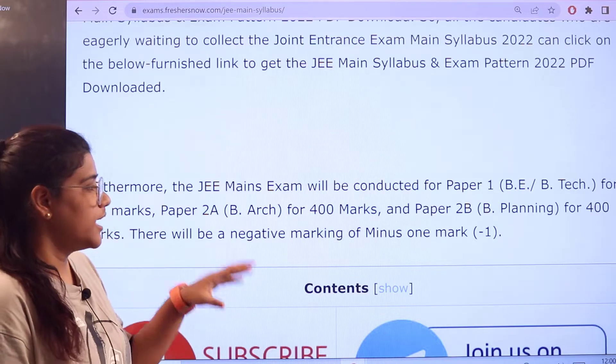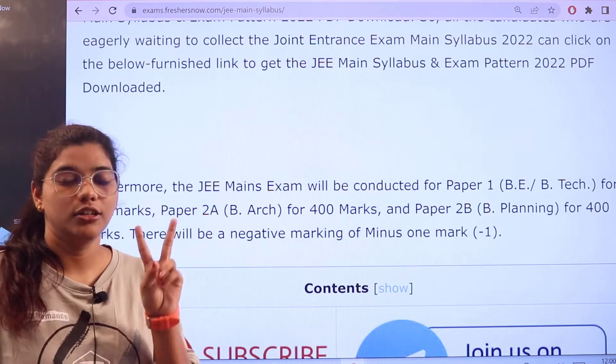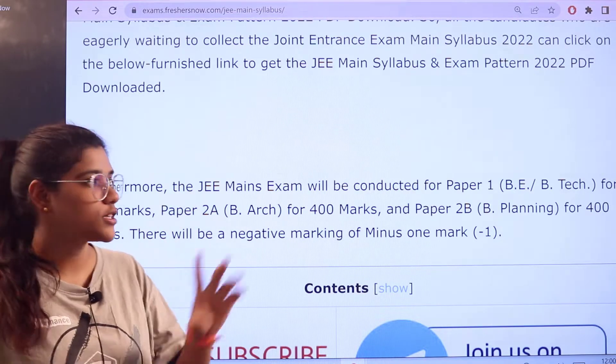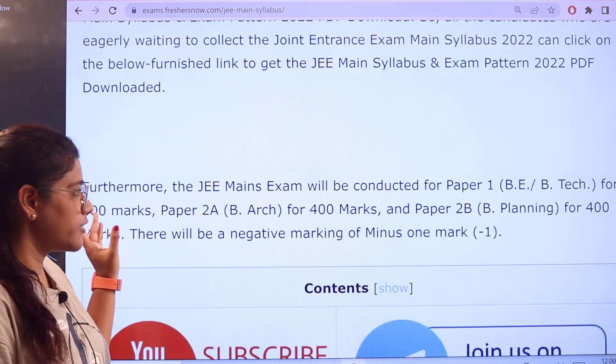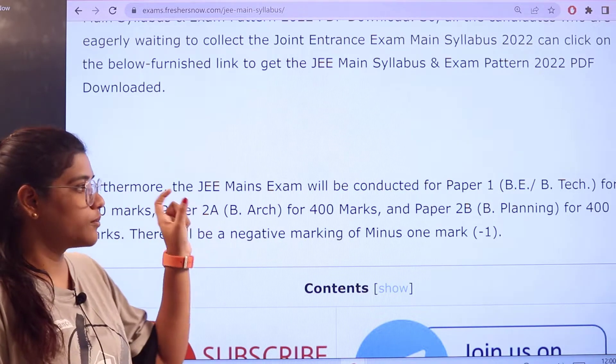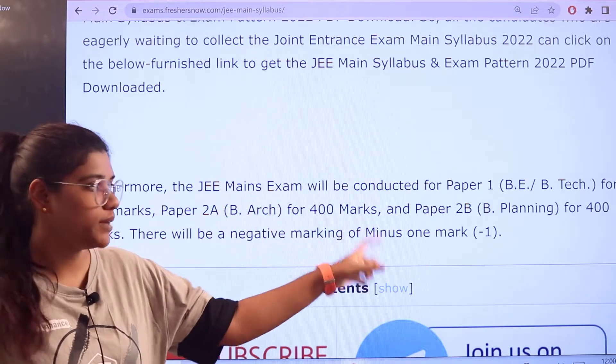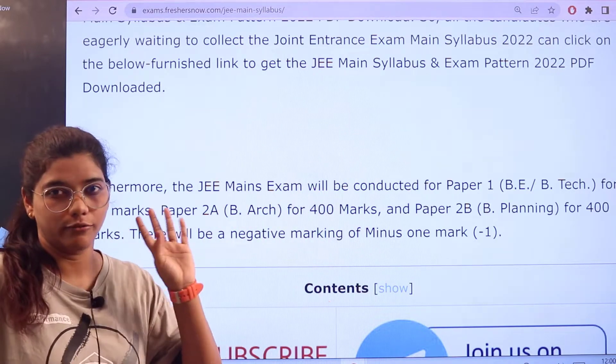So the examination is under two paper basis. Paper 1 is for BE or BTech, and Paper 2, which is going to be for 300 marks. Paper 2A is for B.Arch 400 marks. Paper 2B is for B.Planning which is going to be again for 400 marks.